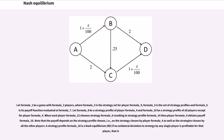Let G be a game with n players, where S_i is the strategy set for player i, S is the set of strategy profiles and u_i is its payoff function. Let s_i be a strategy profile of player i and s_{-i} be a strategy profile of all players except for player i. When each player i chooses strategy s_i resulting in strategy profile s, player i obtains payoff u_i. Note that the payoff depends on the strategy profile chosen, i.e., on the strategy chosen by player i as well as the strategies chosen by all the other players.